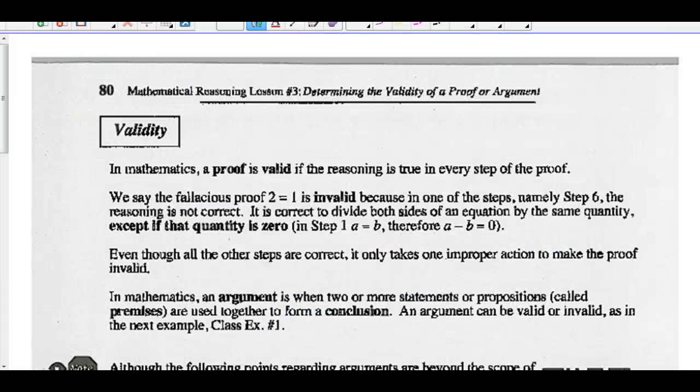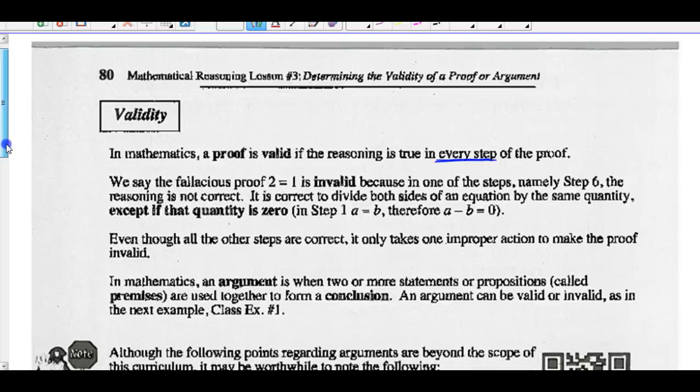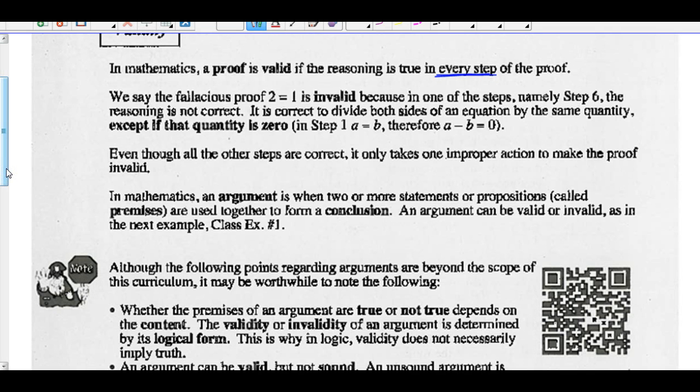Validity. In mathematics, a proof is valid if the reasoning is true in every step of the proof. We say that the fallacious proof 2 equals 1 is invalid because in one of the steps, step 6, the reasoning was not correct. We cannot divide by 0. So even though all the other steps are correct, it only takes one improper action to make the proof invalid.